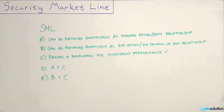So let's look at B. SML can be portrayed graphically as expected return standard deviation of market relationship. Is that correct?